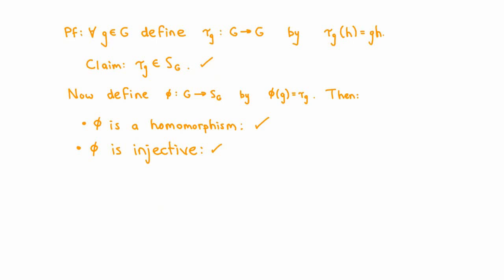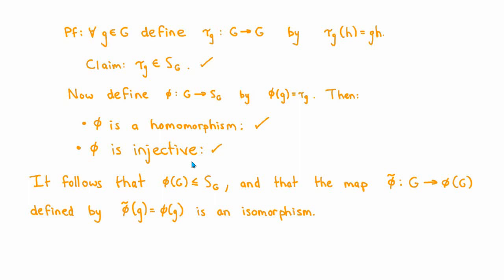We're nearly finished with the proof. Because φ is a homomorphism from G to S_G, we know from basic properties of homomorphisms that the image of G must be a subgroup of S_G. In case you're concerned that φ may not be surjective, we can restrict the codomain to just the image of G. Define φ̃ from G to the image of G under φ by the rule φ̃(g) = φ(g). The injectivity of φ guarantees φ̃ is also injective, and since we've restricted the codomain to the image, φ̃ is also surjective — hence a bijection. It's also a homomorphism, so it's an isomorphism between G and the subgroup φ(G) of the symmetric group on G. That completes the proof of Cayley's theorem, showing the two historical definitions of a group are the same.